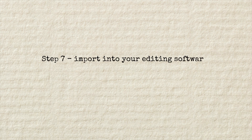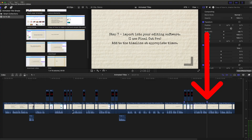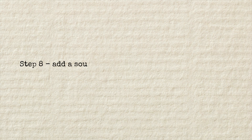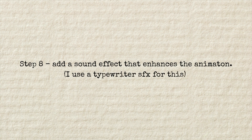Step seven. Import into your editing software — I use Final Cut Pro. Add to the timeline at the appropriate times. Step eight. Add a sound effect that enhances the animation. I use a typewriter sound effect for this.